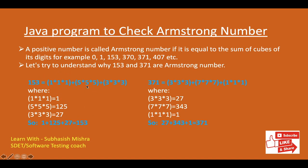So we understand how to find if it is an Armstrong number or not — we get the individual digits, find the cube of each, and add them. If the result equals the original number, then it is an Armstrong number. Similarly for 371: 3×3×3 + 7×7×7 + 1×1×1 = 27 + 343 + 1 = 371. So let's go to Eclipse and write this program.